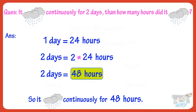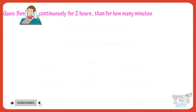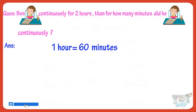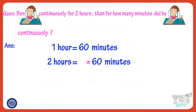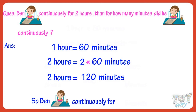Now let's solve the next question. Ben wrote continuously for 2 hours. Then how many minutes did he write continuously? One hour equals 60 minutes. So 2 hours equals 60 multiplied by 2, equals 120 minutes. So Ben wrote continuously for 120 minutes.